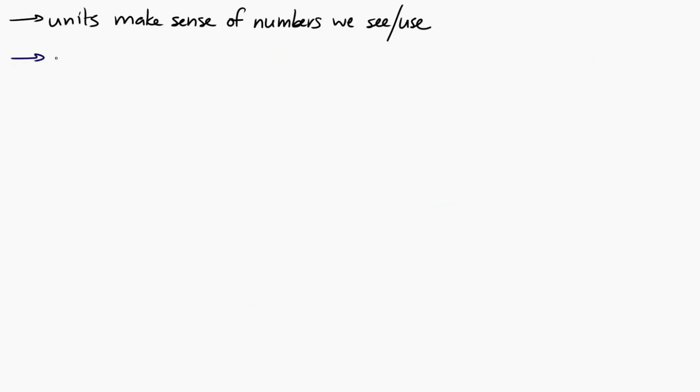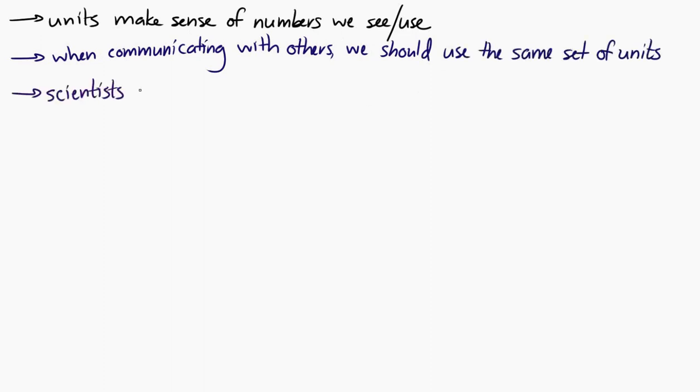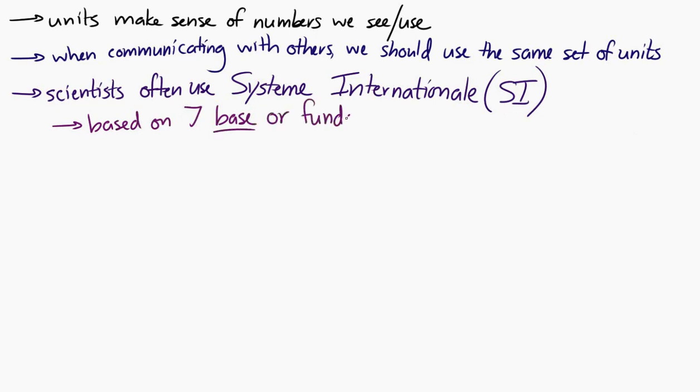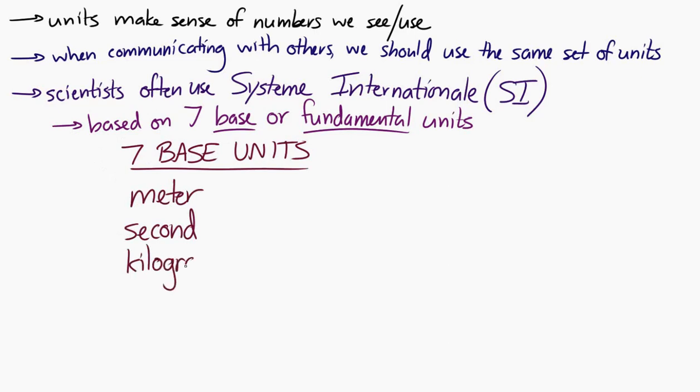Now, if we're going to communicate with other people about measurements, it's useful if we're all using the same set of units. And in the scientific community, they often use something called the Systeme Internationale, or SI system. The SI system is based on seven base or fundamental units. And that's all you need for any measurement that you can conceive of in physics. And the seven base units are the meter, the second, the kilogram, the kelvin, the mole, the ampere, and the candela.